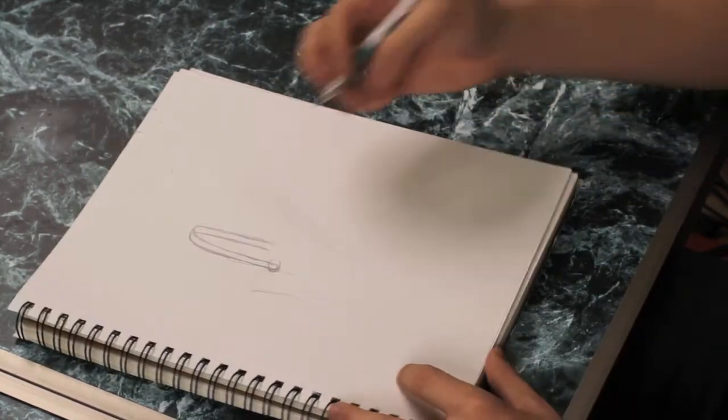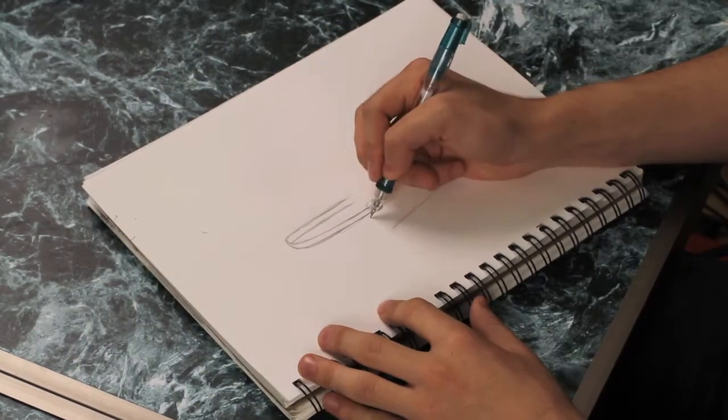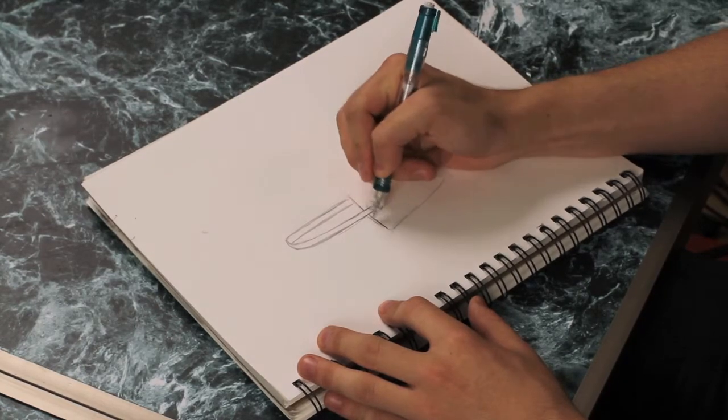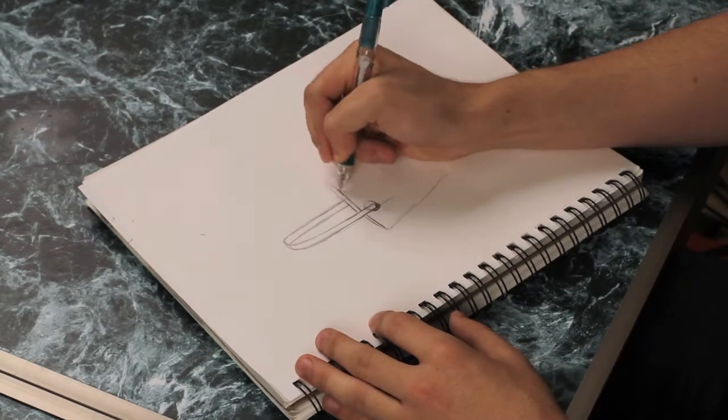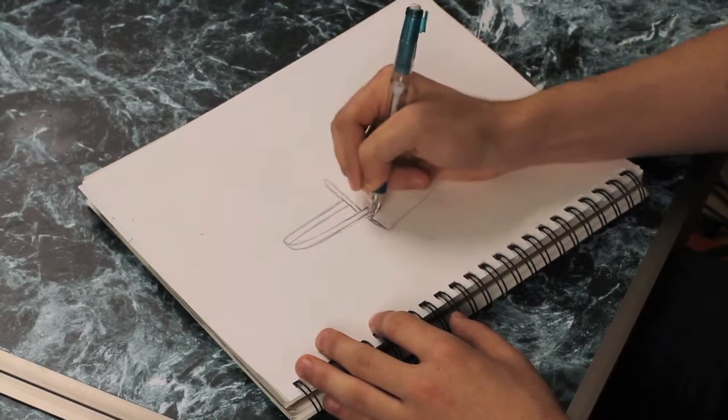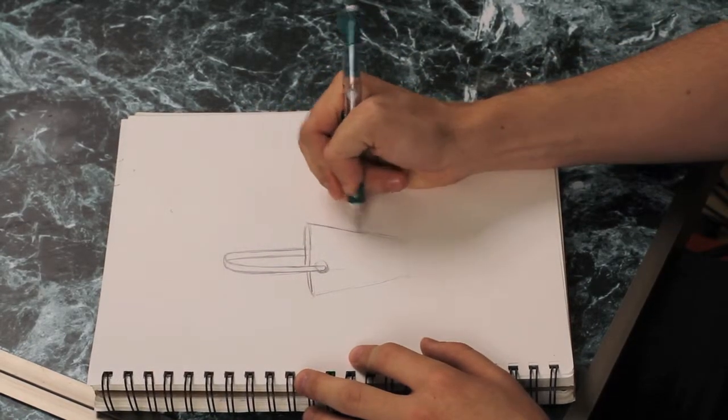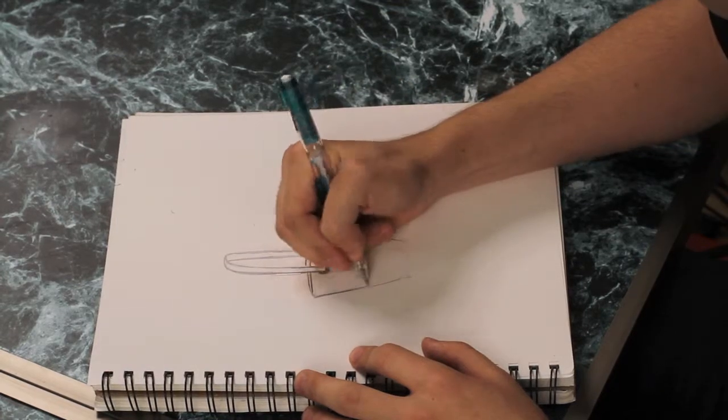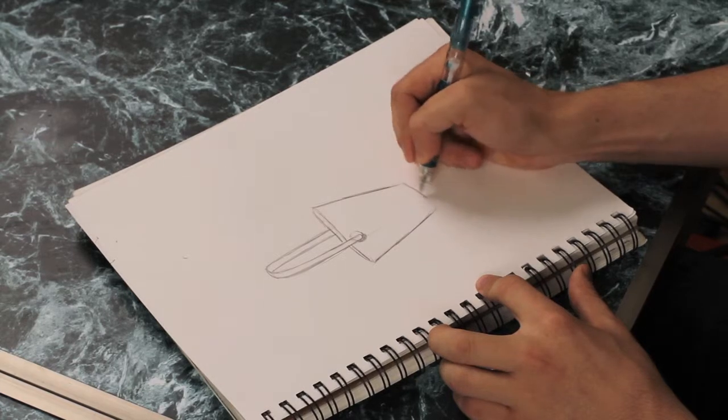Okay, now that we have the handle we can go ahead and draw in the bucket itself. The top, depending on the angle you want, can be very flat. Or you can show some line behind it to give it that 3D circular feel. And then on the edges just follow the line down. And give the bottom a slight curve to it.